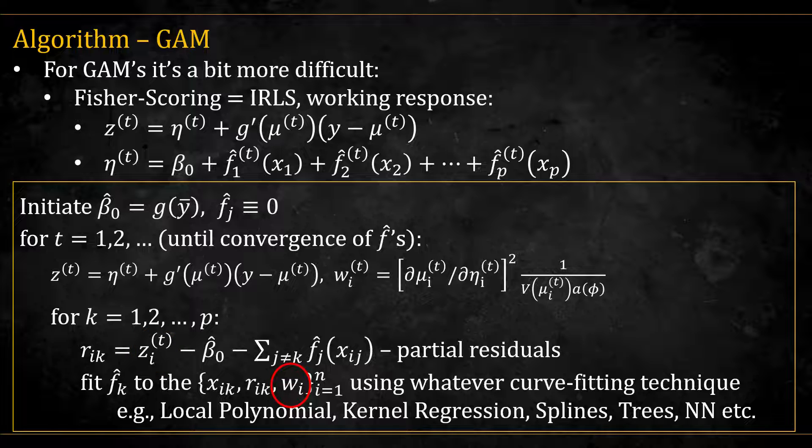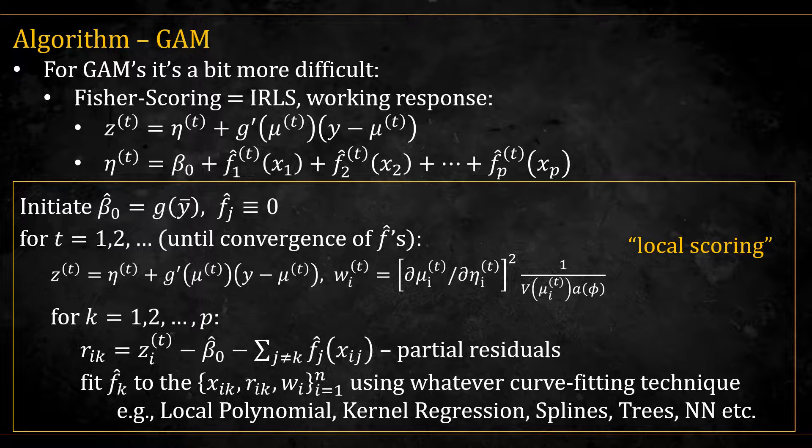we can use any function approximator we wish, with the added complexity of incorporating the weights. Hastie and Tibshirani call this algorithm local scoring, because it's doing Fisher-scoring in its IRLS formulation, using local estimates of f's. In the paper, they used local linear regression.